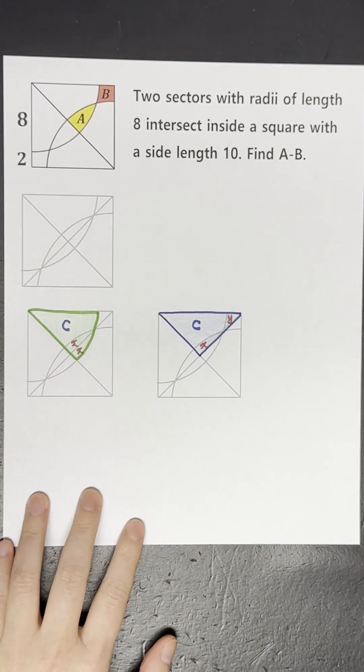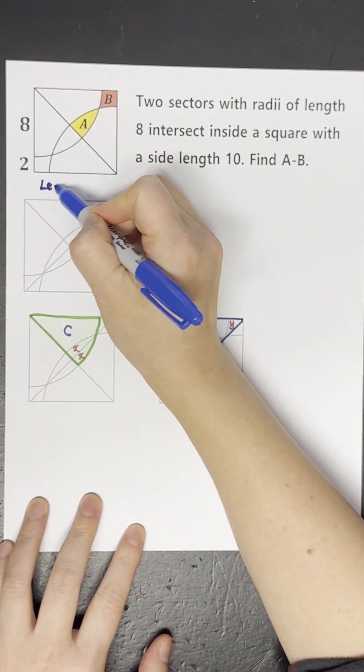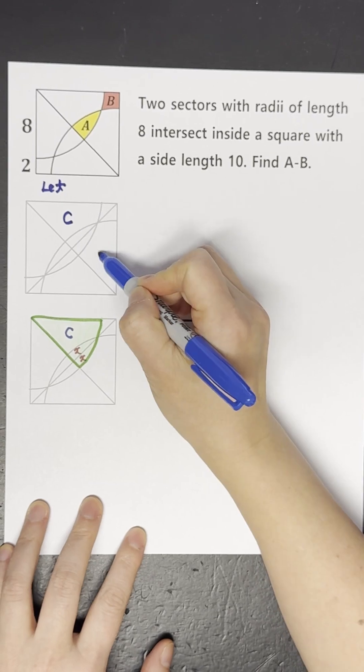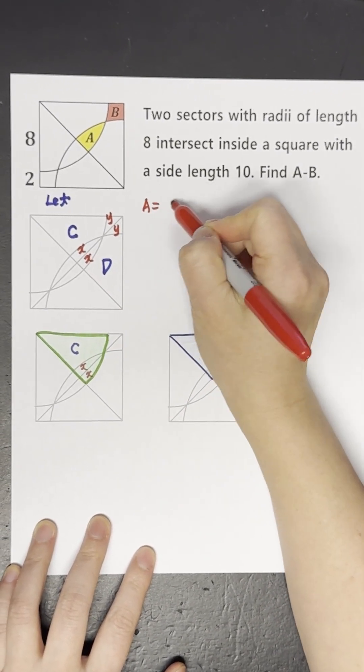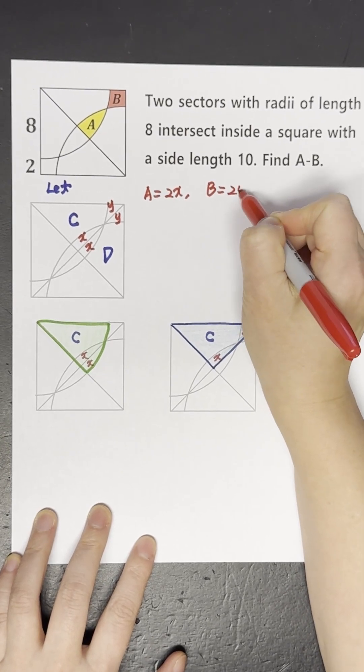Can you find A minus B? We'll solve this difficult-looking shape by changing the locations of the colored A and B. We can see that A equals 2x and B equals 2y.